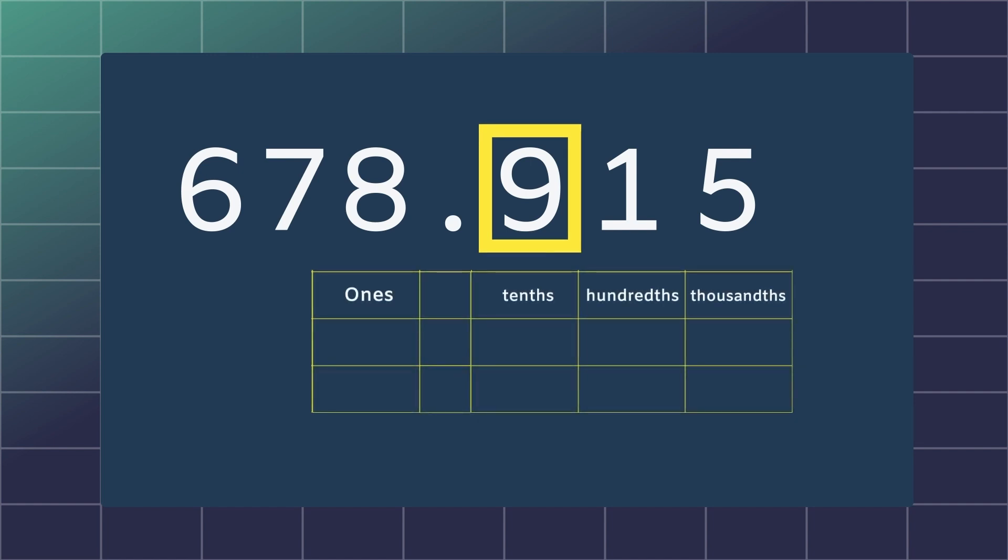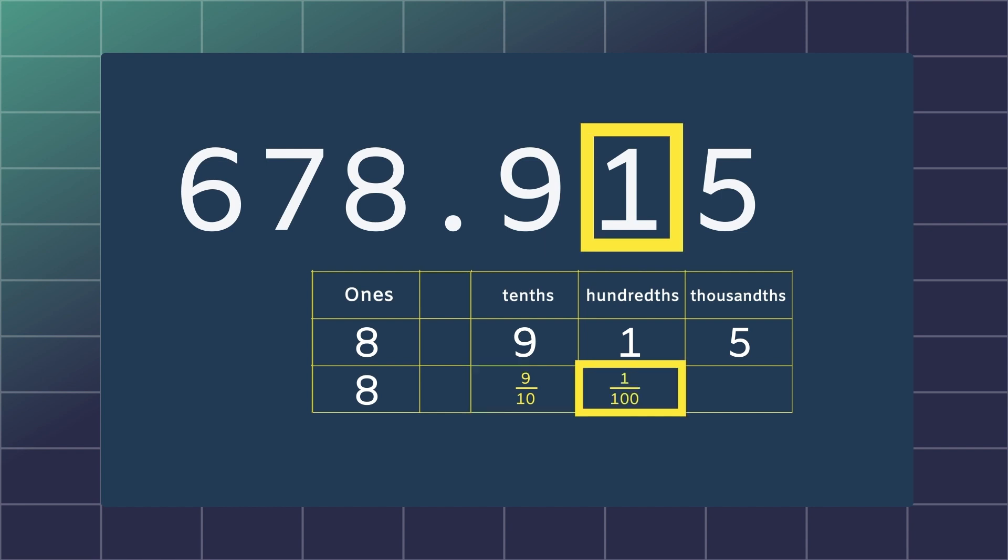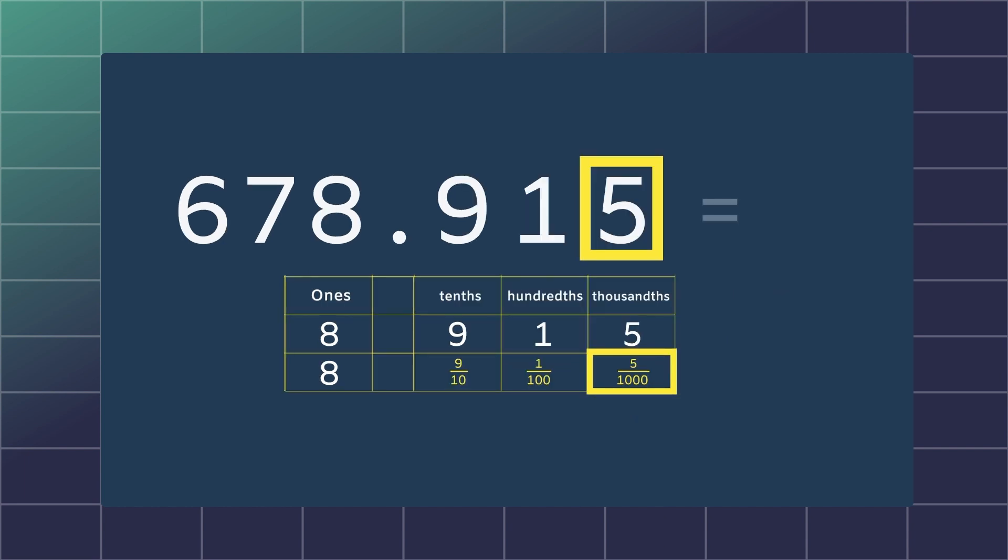If we want to find the place value of the number 5 in the number 678.915, we must look at the numbers on the right side of the decimal point. We have the tenths, hundredths, and the thousandths place. Top tip: the base 10 will tell you how many digits should follow the decimal point. The nine represents nine tenths, the one represents one hundredth, and the five represents five thousandths. So the place value of the number 5 represents five one thousandths.